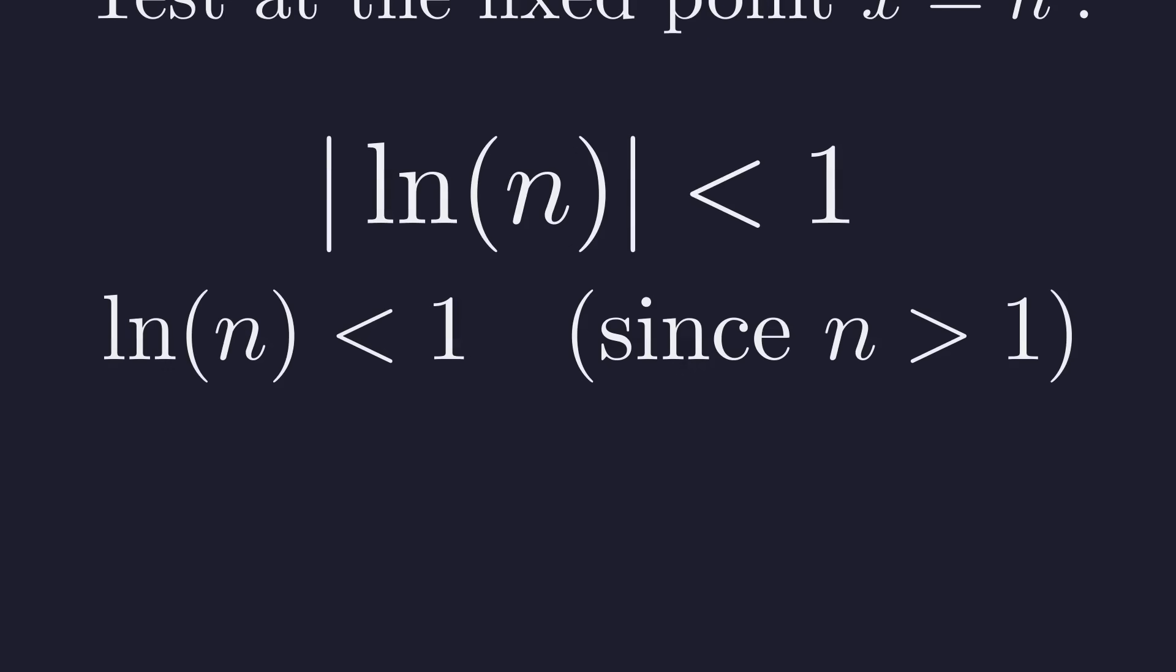Since n is greater than 1, its natural log is positive, so we can drop the absolute value bars. The stability condition is simply that the natural log of n must be less than 1.